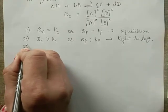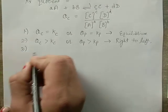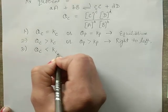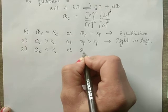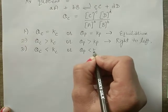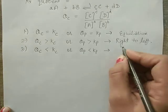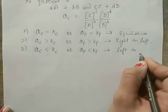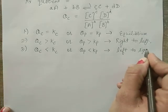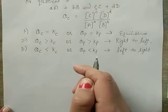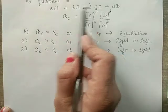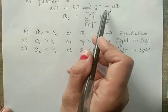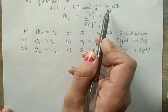In the third case, if Qc is less than Kc, or Qp is less than Kp, then the reaction moves from left to right — meaning the reaction proceeds in the forward direction, in the direction of products.